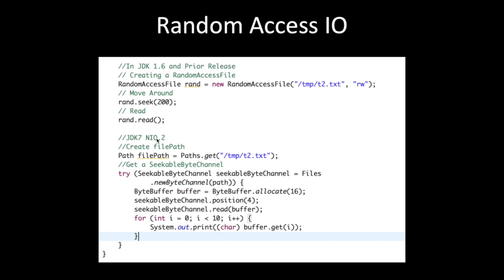In JDK7 NIO2, again from the Path API, we get the file path and then use a SeekableByteChannel. Using SeekableByteChannel, we can go directly to the position and then we can read.